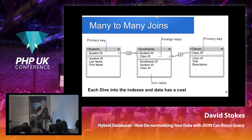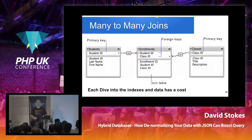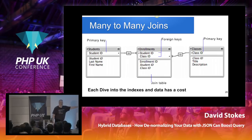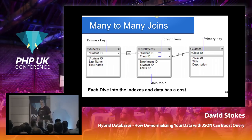This is the database world known as a many-to-many join. Each time you do this, you have to dive into the index table, and from the index table dive into the data table. So here we dive into one index, to one table, into a second index, into another table — which might actually be several records — and yet again into a third one. We have at least six dives into the indexes and data. Not exactly a cheap operation.